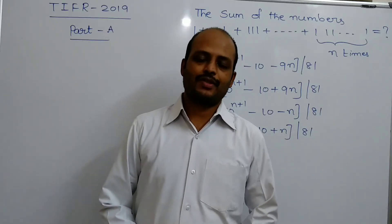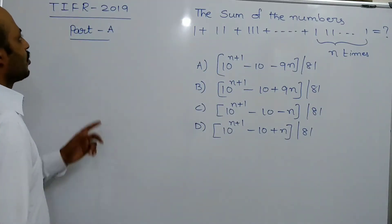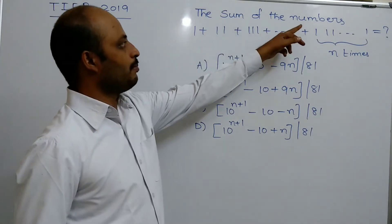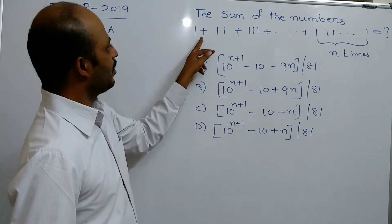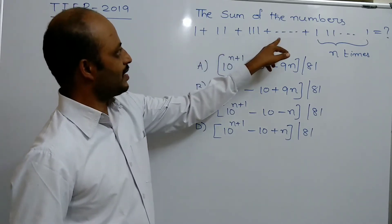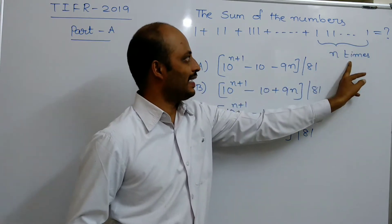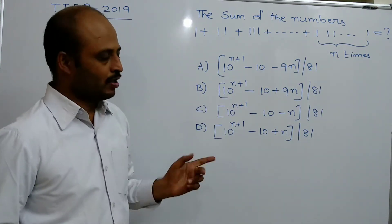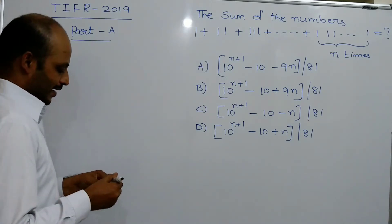Hi, welcome to Sunil Maths Tutorial. TIFR 2019 Part A question: the sum of the numbers 1 plus 11 plus 111 plus and so on plus 111...1 (n times) is equal to what? There are 4 options, and among them 1 option is the correct option you have to find.